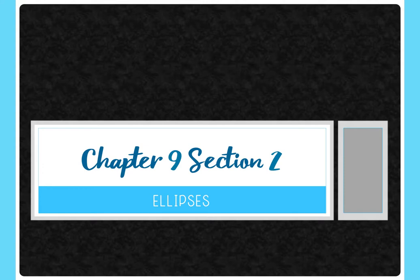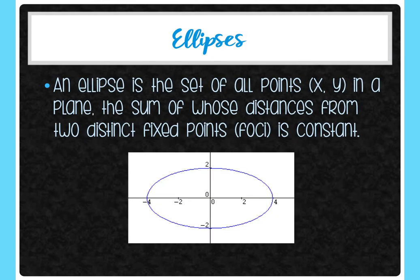Section 9.2 is ellipses — this is the third of the four conics we're going to do. Ellipses are basically just an oval, so you're going to do the same kinds of things as with circles and parabolas: get an equation and pull information out of it, graph it, or vice versa. An ellipse is the set of all points (x, y) in a plane in which the sum of the distances from two distinct fixed points — the foci — is constant.